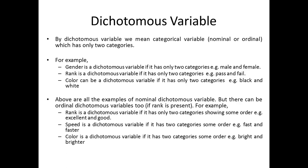By dichotomous variable we mean categorical variables — namely nominal and ordinal — which only have two categories. We can have variables with multiple categories, but particularly if we want variables with just two categories, those are called dichotomous variables. For example, gender is a dichotomous variable if it has only two categories such as male and female; rank is dichotomous if it has only two categories such as pass and fail; color can be dichotomous if it has only two categories such as black and white.